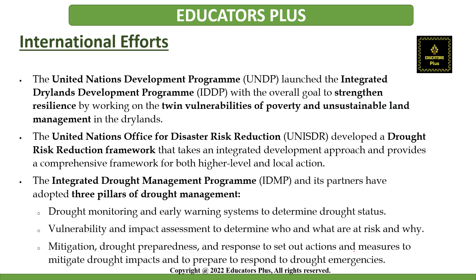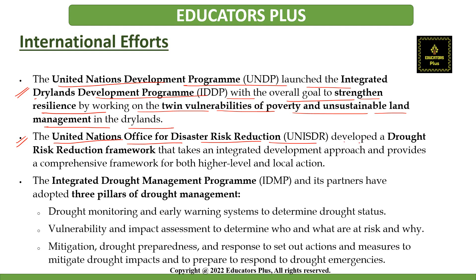Regarding international efforts, the United Nations Development Programme (UNDP) launched the Integrated Dry Lands Development Program with the overall goal to strengthen resilience by working on the twin vulnerabilities of poverty and unsustainable land management development in the dry lands. The United Nations Office for Disaster Risk Reduction developed a drought risk reduction framework that takes an integrated development approach and provides a comprehensive framework for both higher level and local action.